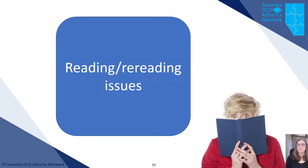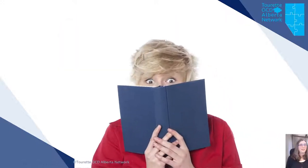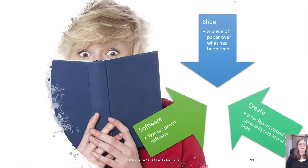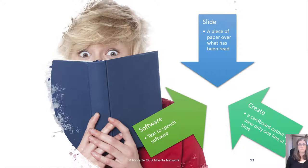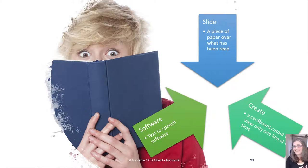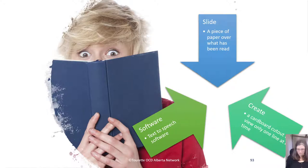For rereading issues — my middle boy's case showed us this — you can take a piece of paper and cover what has been read, requiring them to keep moving it down. This worked really well for him and his reading speed improved. If needed, create a cardboard cutout with a window so they can only see one line at a time, which prevents both rereading and jumping forward — especially useful for students who have both OCD and ADHD. Text-to-speech software is also always helpful.